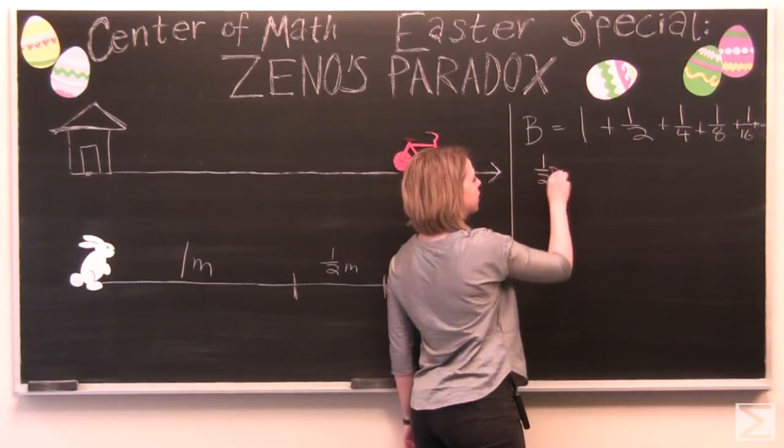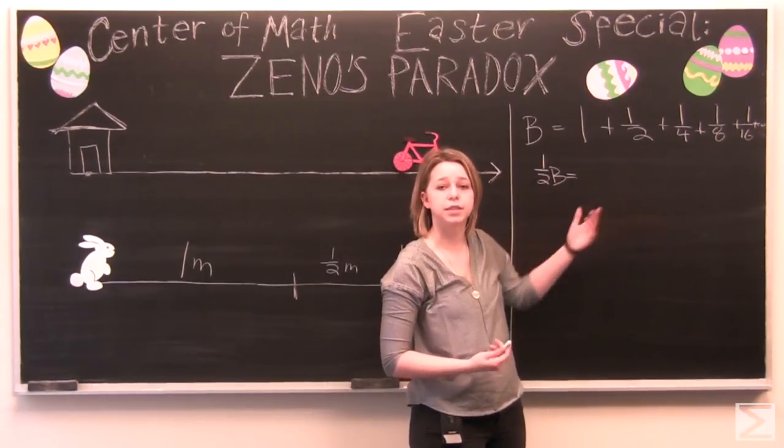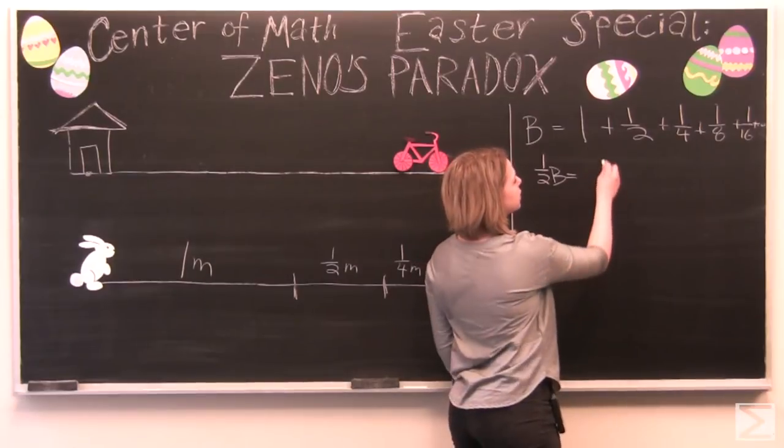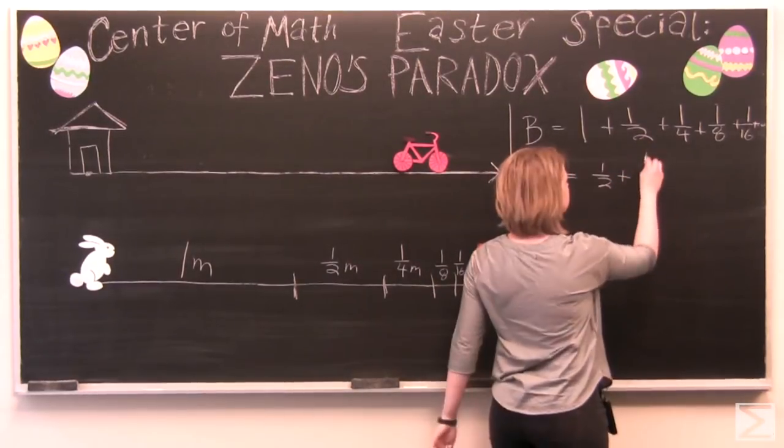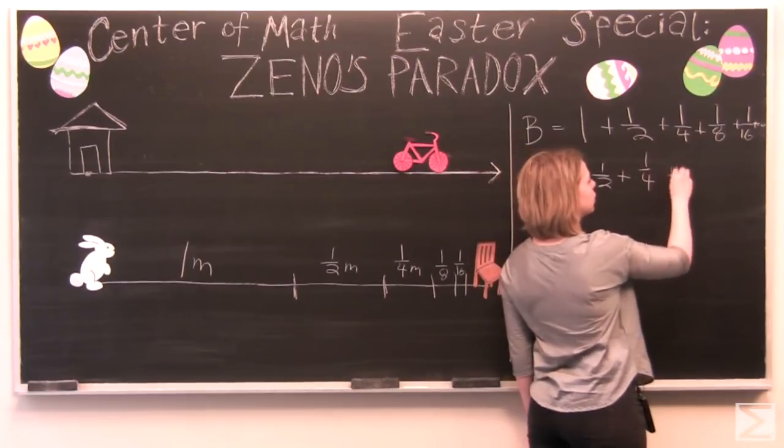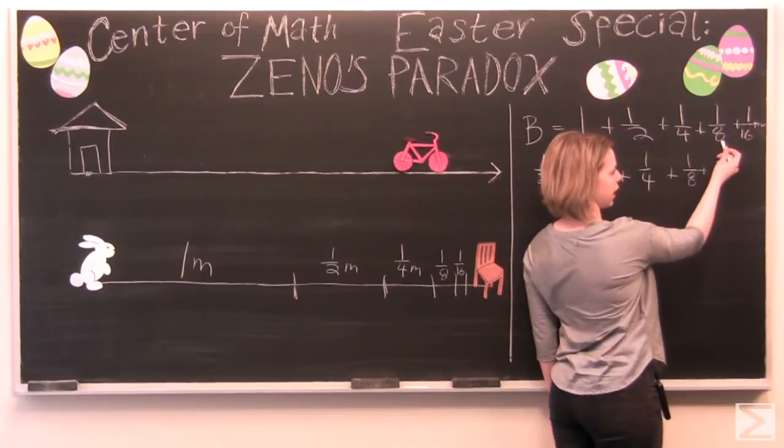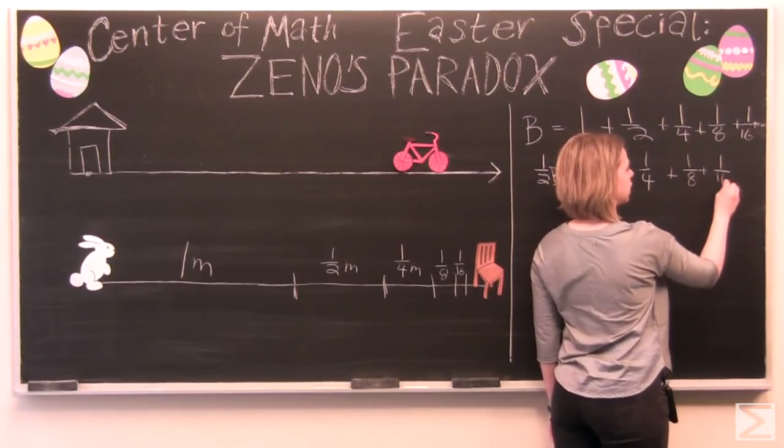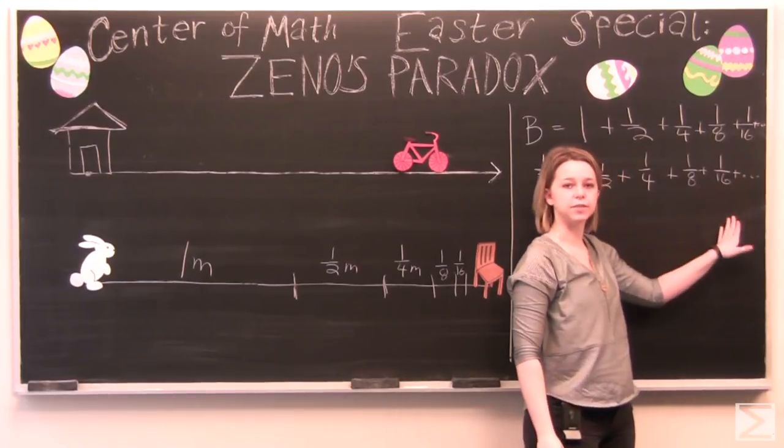So one half of our b. And we're going to divide each of the terms separately. So one divided by two is one half. Plus one half divided by two is one quarter. Plus one quarter divided by two is one eighth. Plus one eighth divided by two is one sixteenth. And each of the subsequent terms are going to be divided by two.